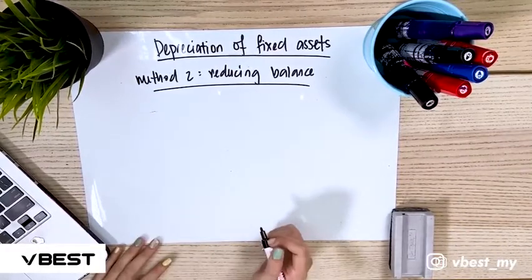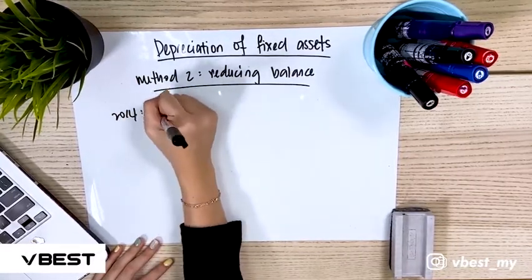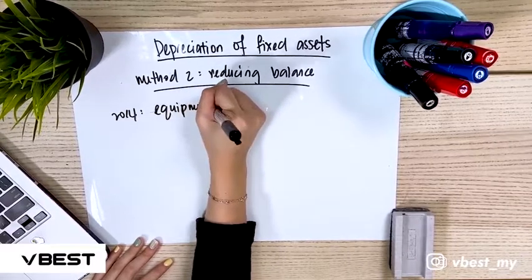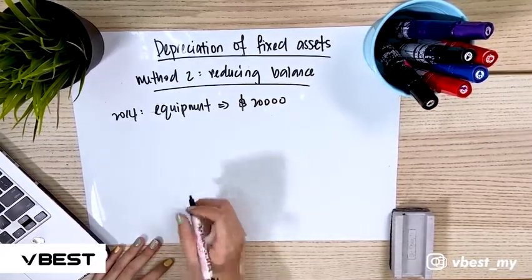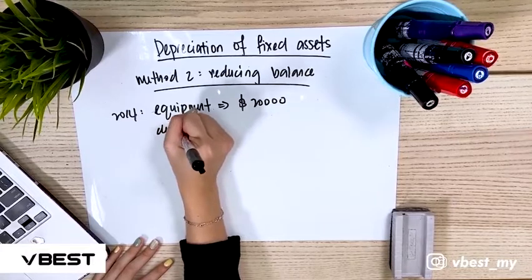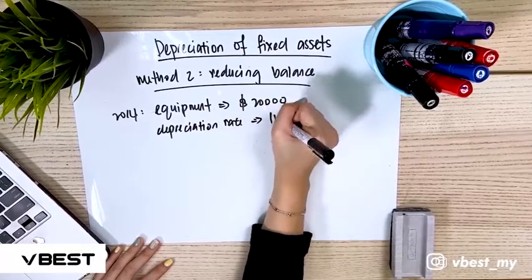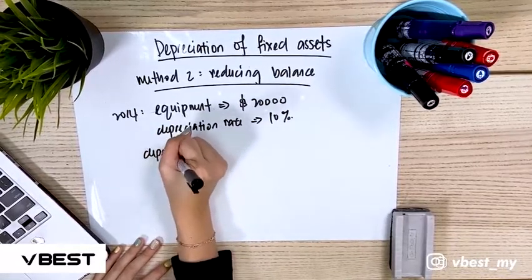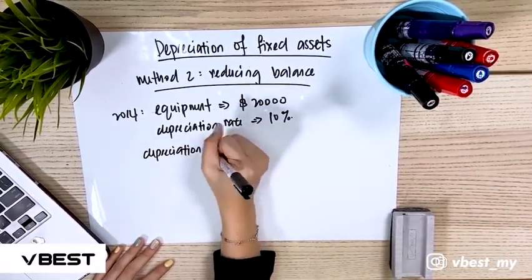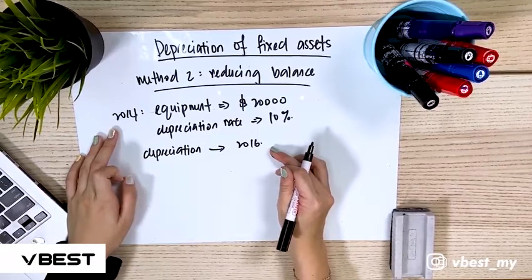A business owner bought some equipment in 2014. The equipment cost 20,000 and the business applies a depreciation rate of 10%. The question asks us to calculate the depreciation from 2014 to 2016, which is 2 years.